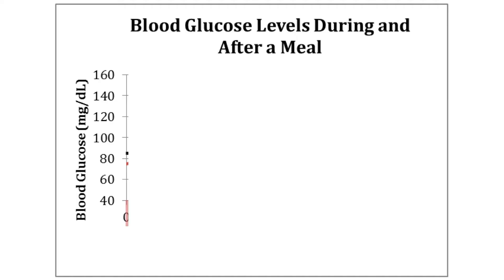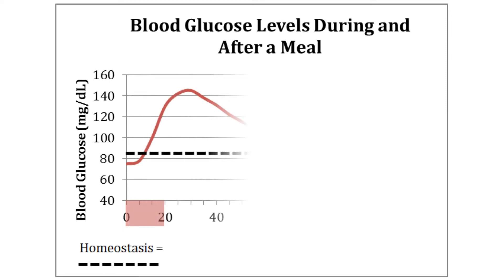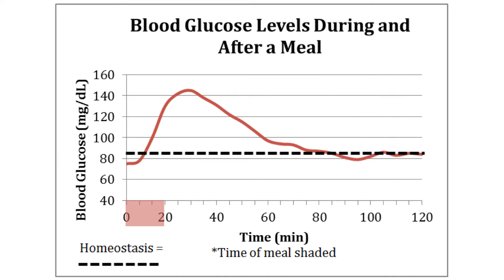This is an old friend: blood glucose levels. It's actually an American graph, so the measure is milligrams per deciliter, not the millimoles that we've been used to. It doesn't matter. The left-hand axis on a graph shows what you are measuring — the thing that you've been measuring. And along the bottom of the graph, you have the factor called the independent variable, which in this case is time.